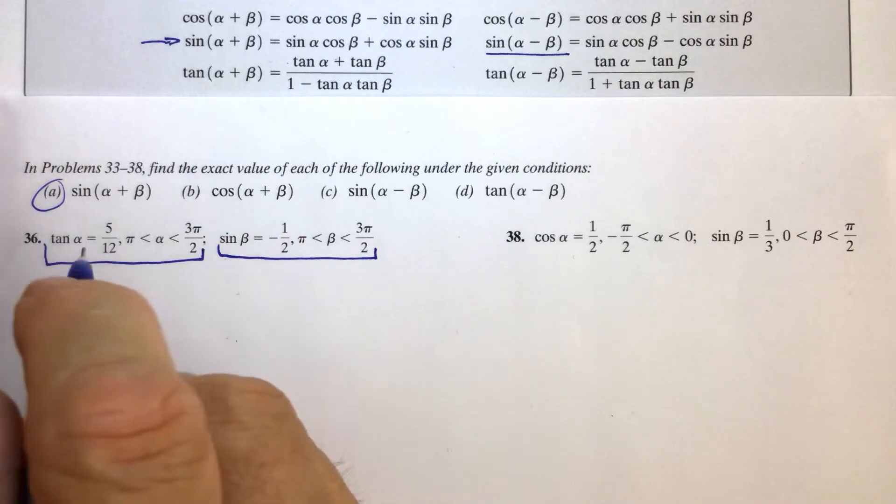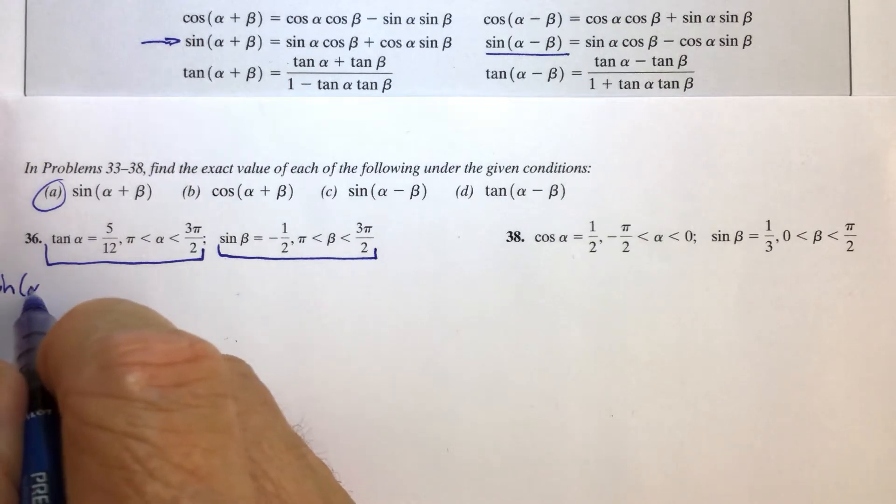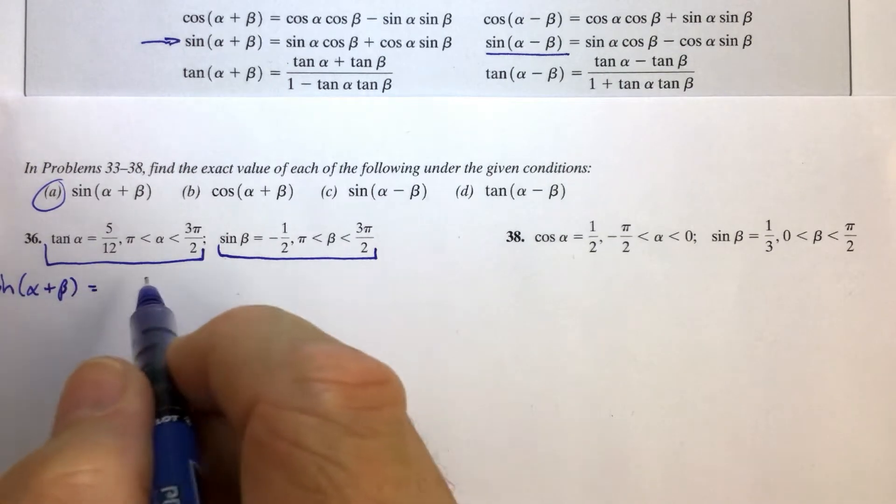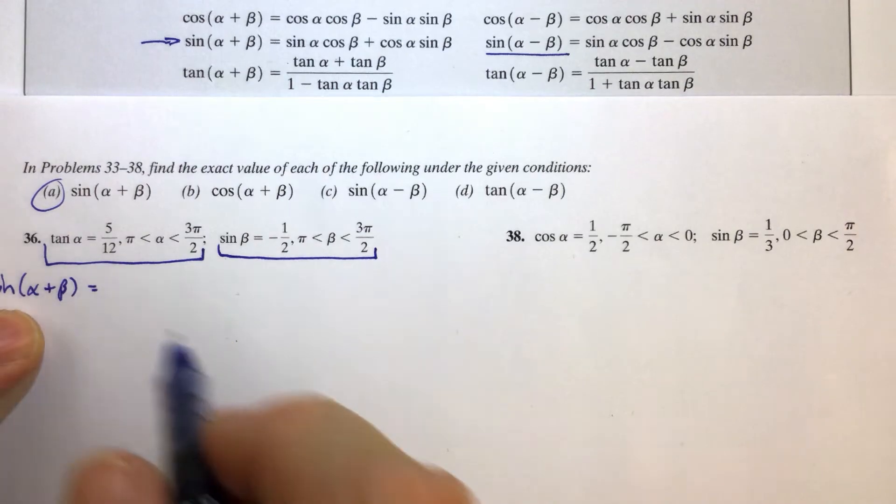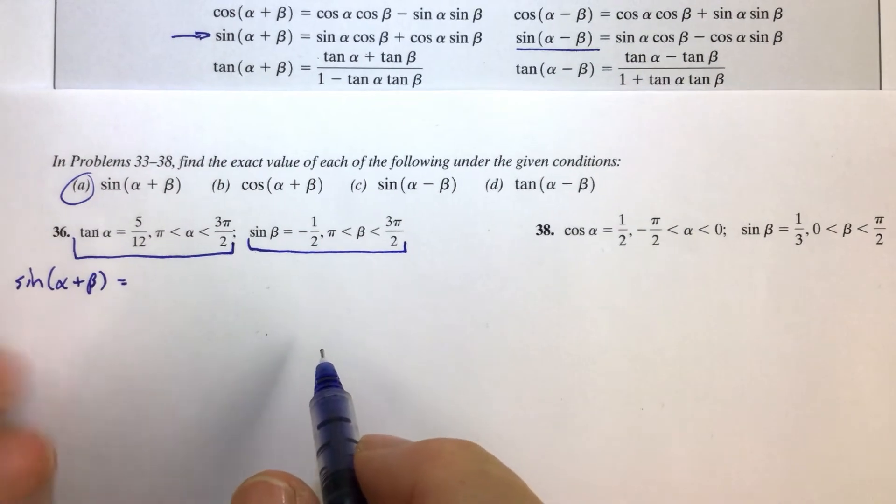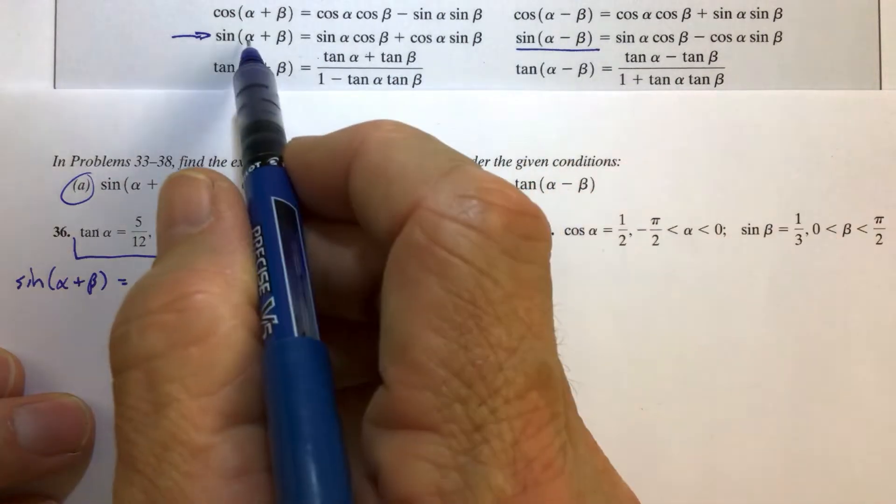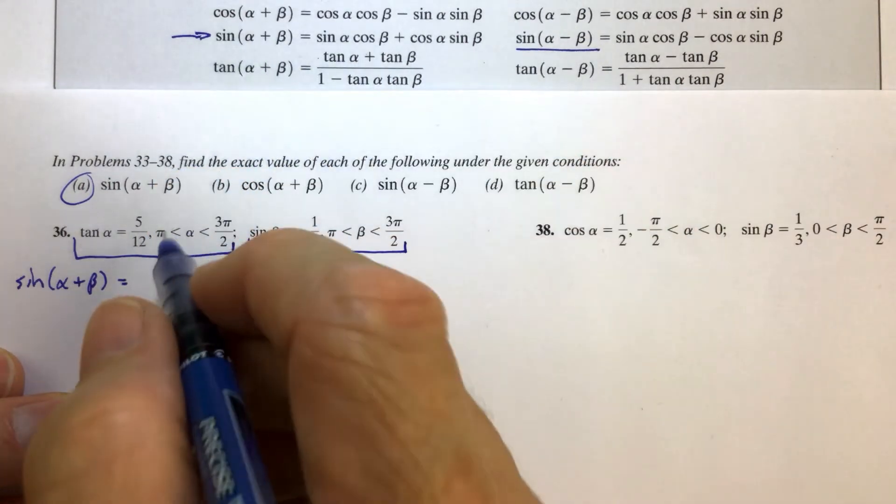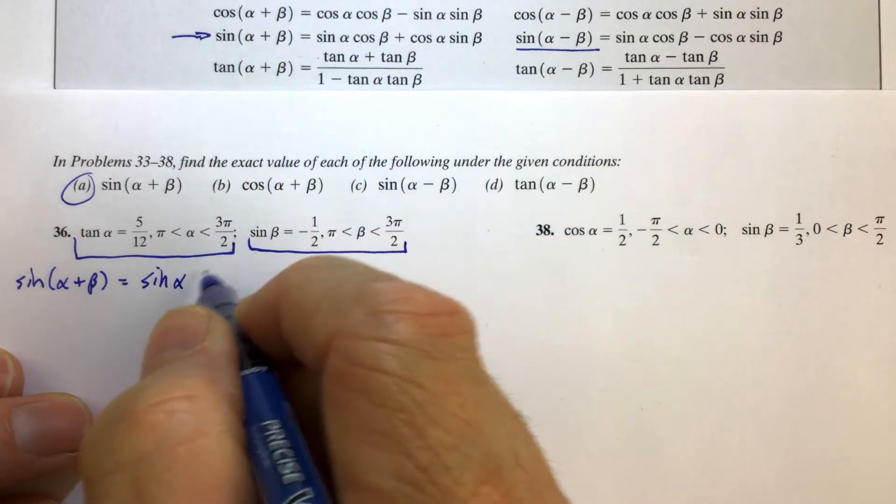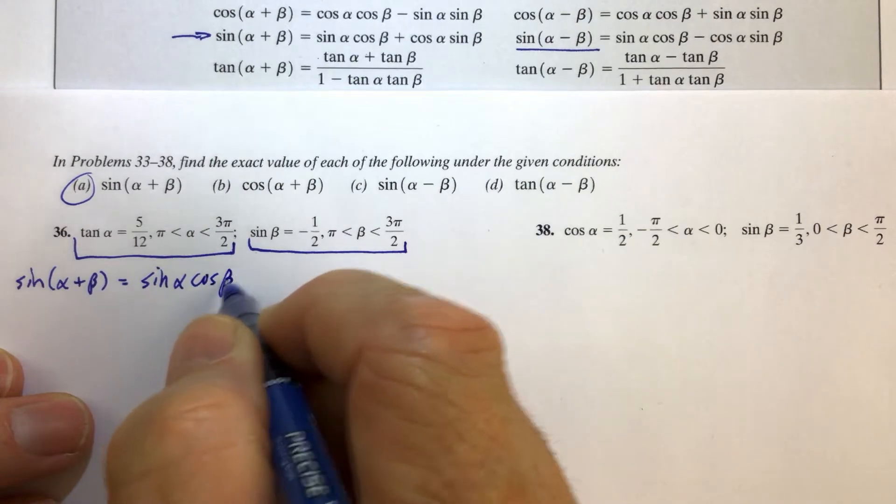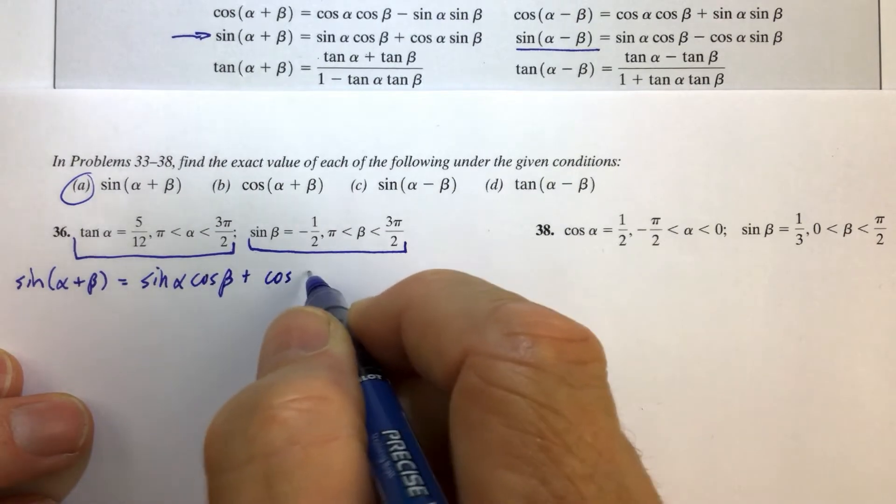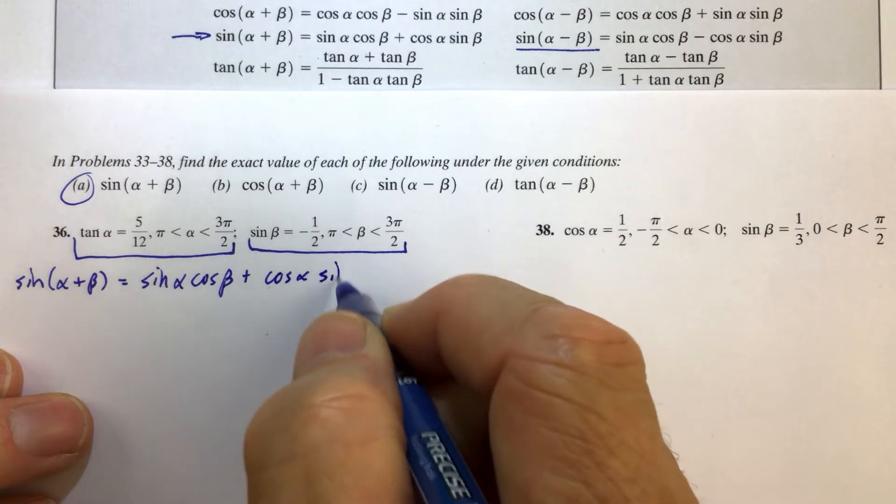So we're going to first figure out what is the sine of alpha plus beta. Well, the sine of alpha plus beta is not the sine of alpha plus the sine of beta, so you really need to be paying attention to this. We have to use the addition formula. Sine of alpha plus beta is the sine of alpha times the cosine of beta plus the cosine of alpha times the sine of beta.